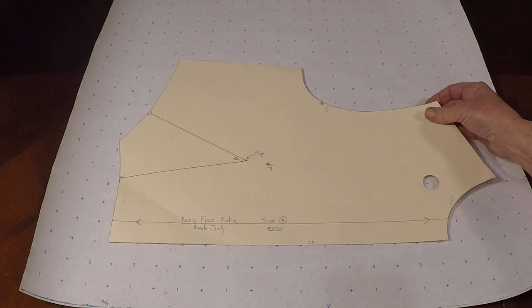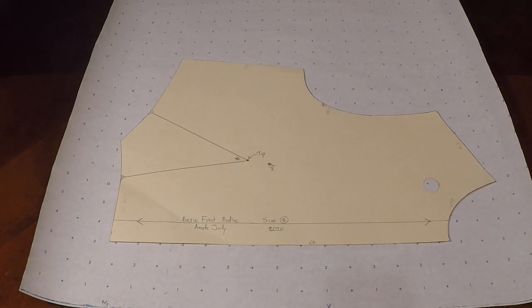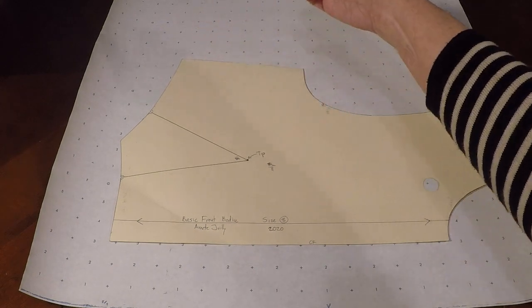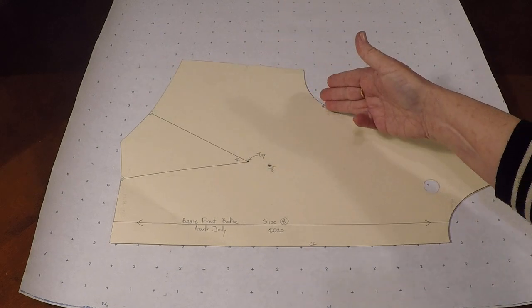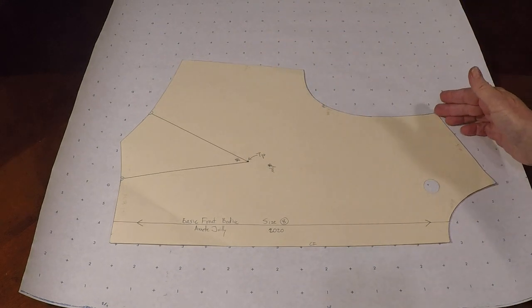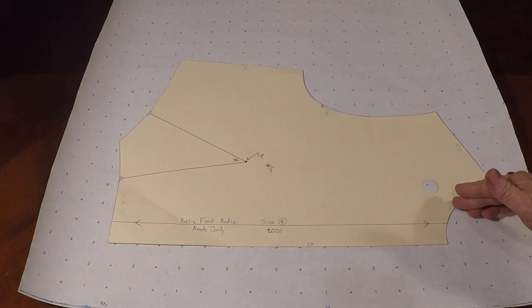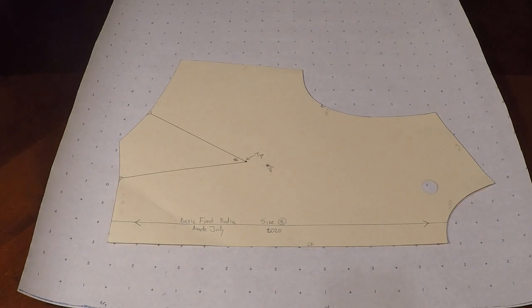And first we're going to start by thinking where are we going to transfer this right waist dart to. You can transfer it to the side seam in the French dart position or side bust, you can do it to armhole, low point of shoulder, mid shoulder, high point of shoulder, neckline, center front, center bust, waist. There are so many different places. So you've got to go ahead and decide where you're going to transfer it to.